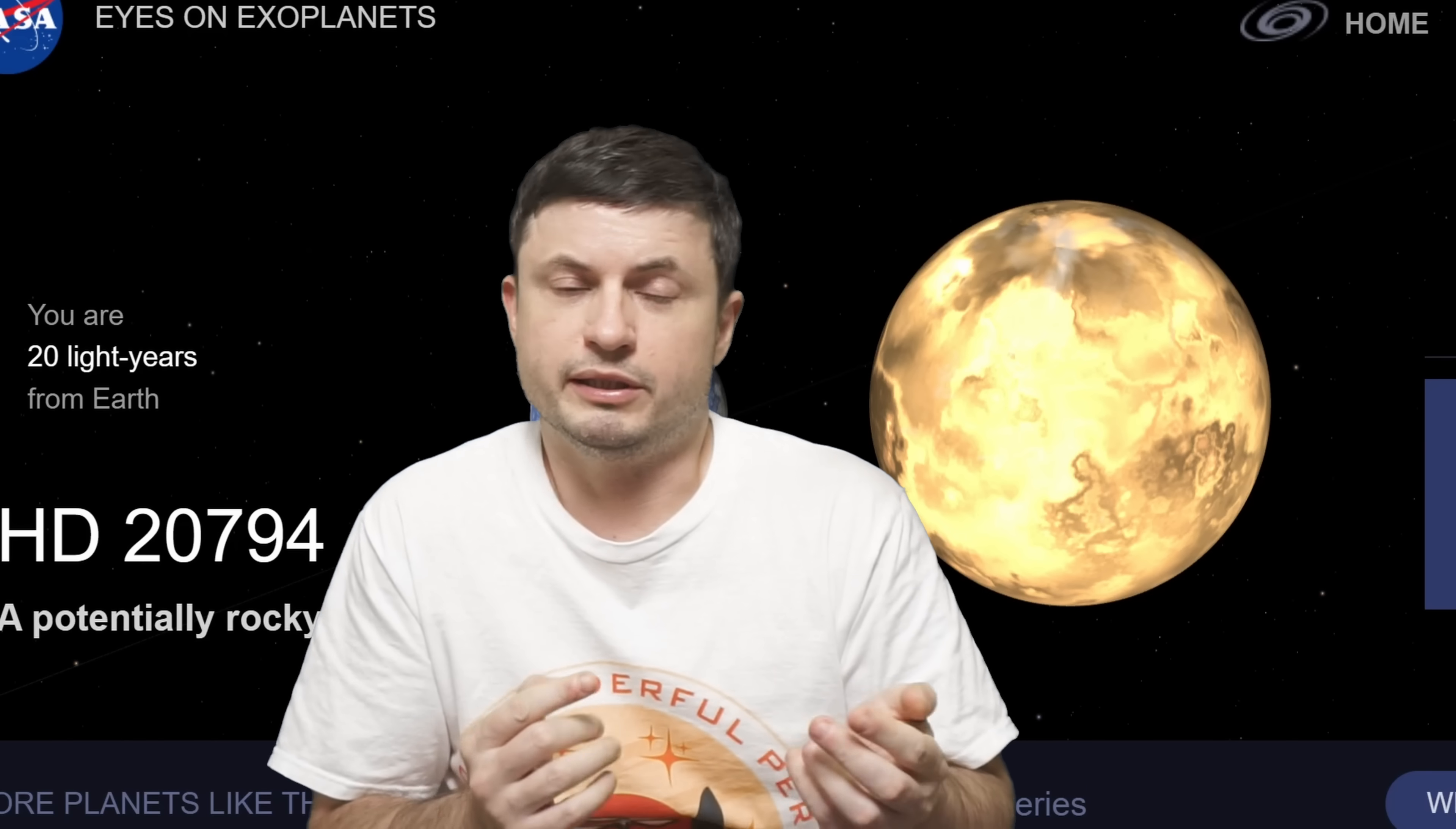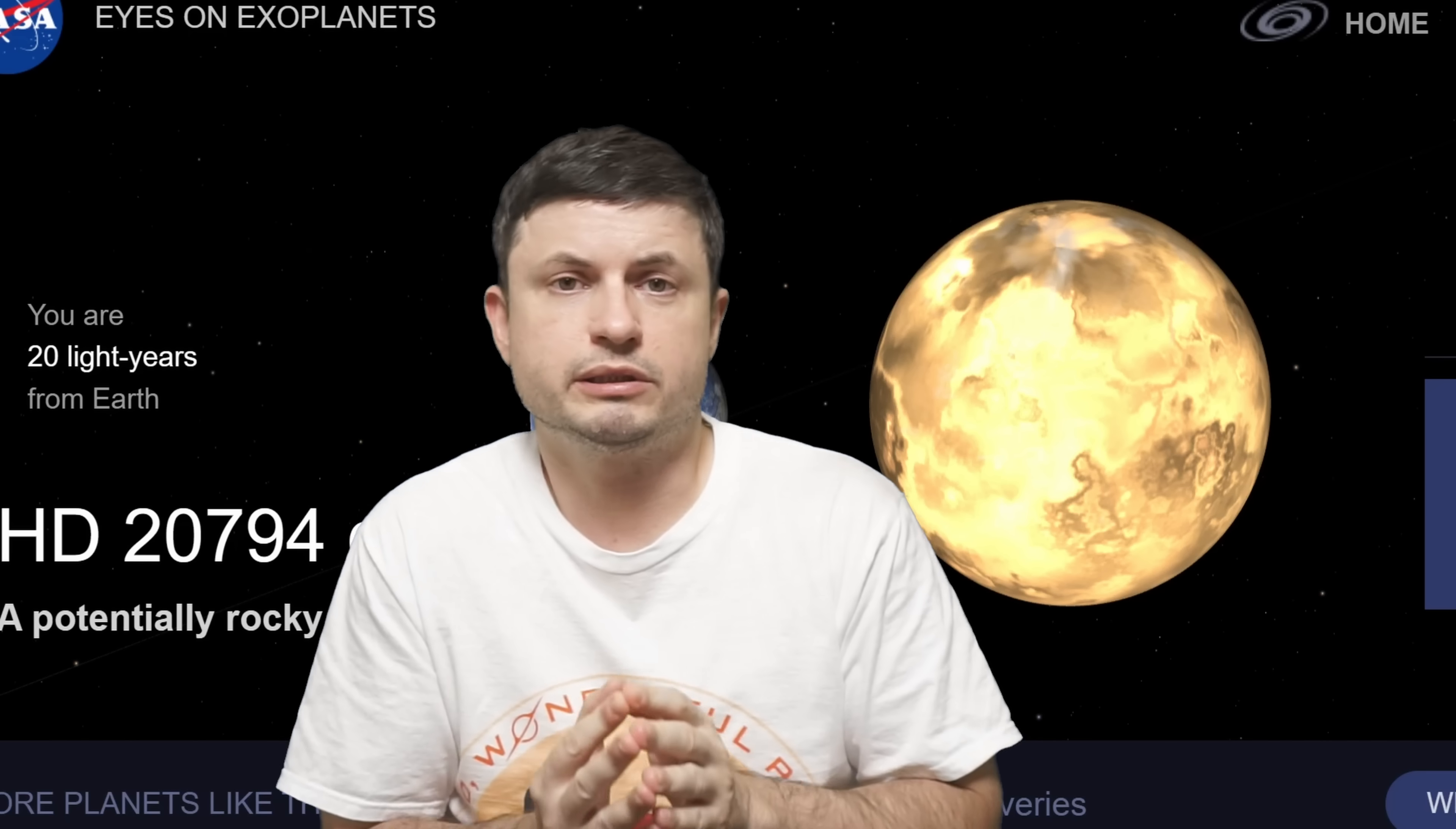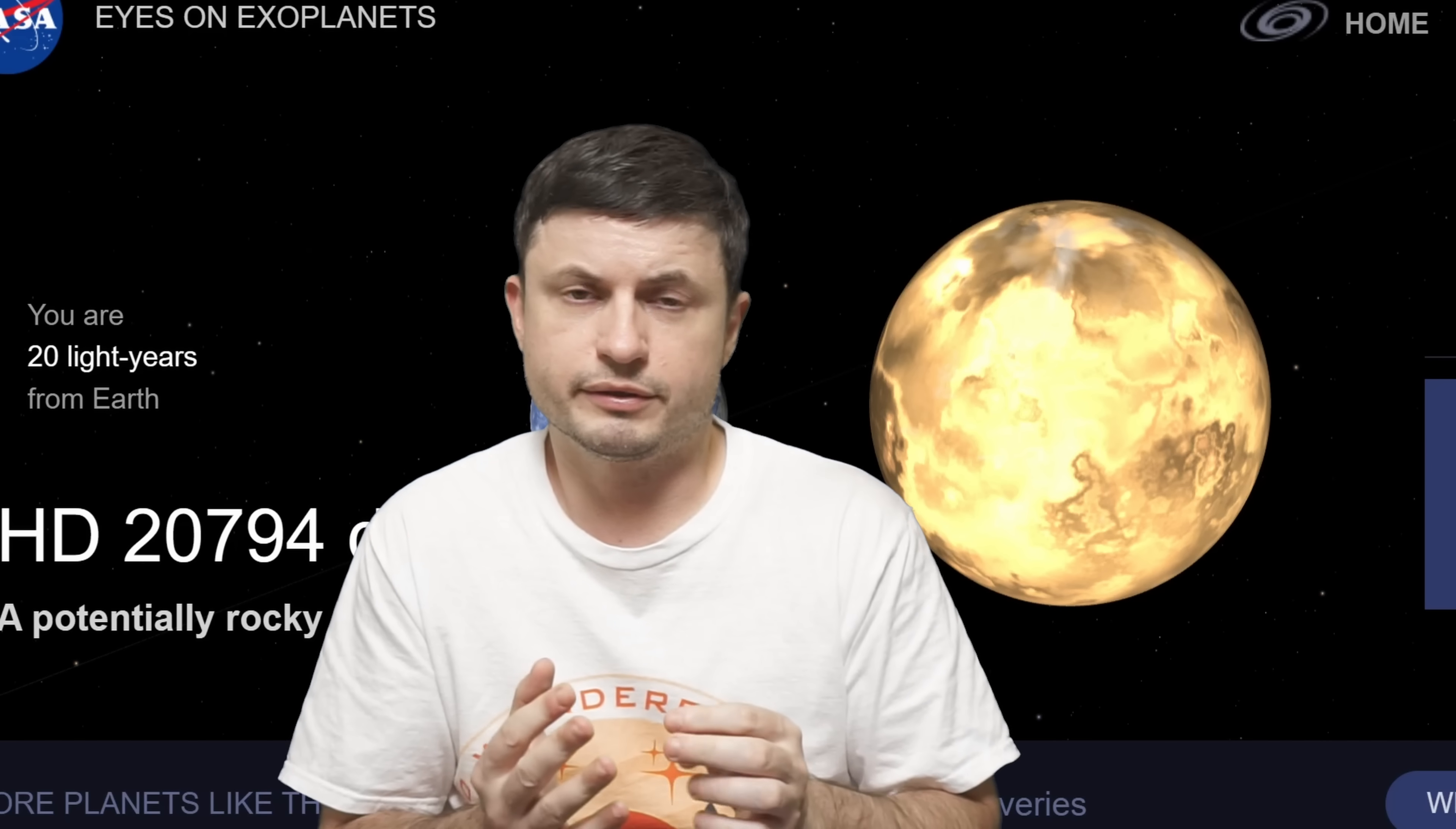And so every 650 days, this planet goes between these two extremes, with a single year actually being relatively similar to what we have on Mars, or approximately 40 days shorter.